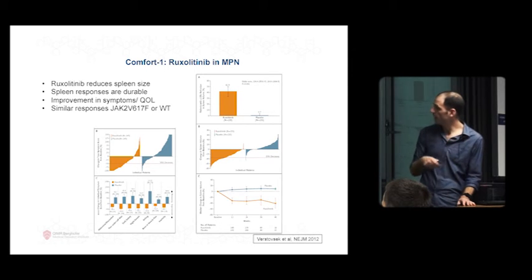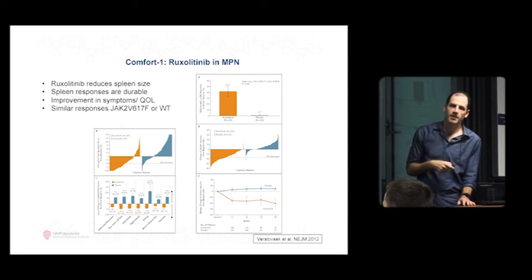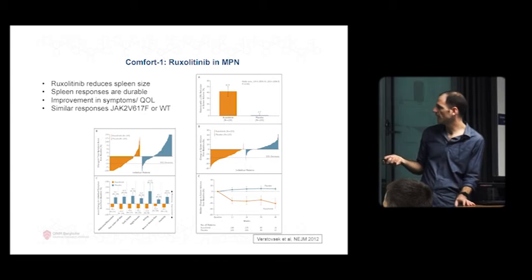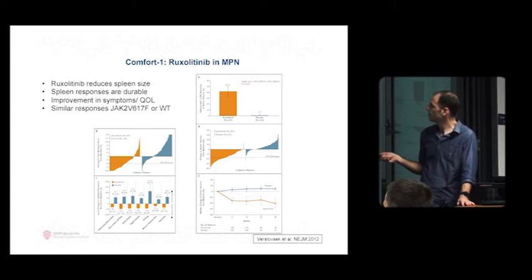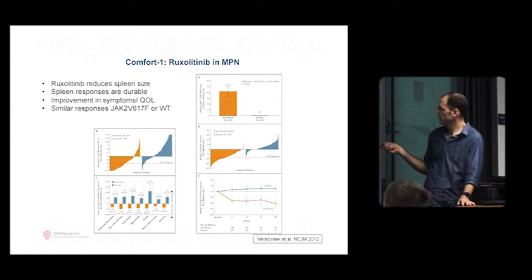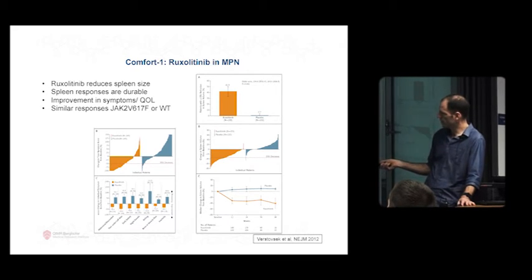This is what the actual study showed. They wanted to know whether it reduced the spleen size, and it did. This is the percentage of patients who had a reduction in spleen size - about 50% of patients have a reduction. This is the actual spleen volume reducing in the ruxolitinib group, not reducing in the placebo arm.